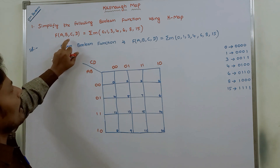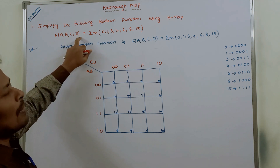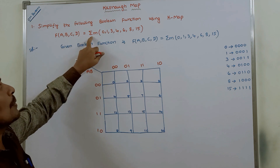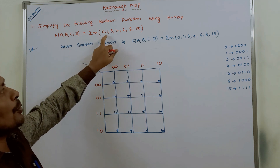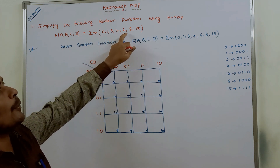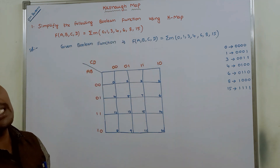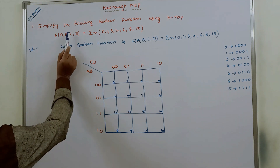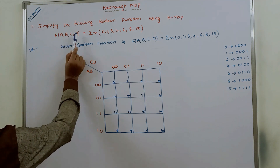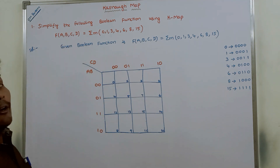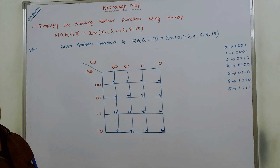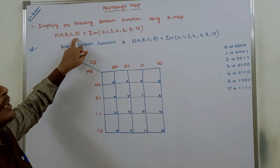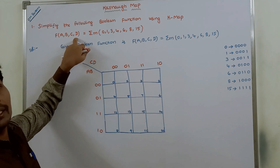So f(a, b, c, d) = Σm(0, 1, 3, 4, 6, 8, 15). The given Boolean function is a 4-variable function because there are 4 variables.